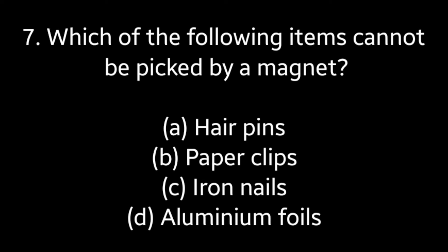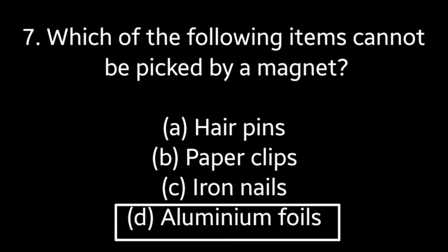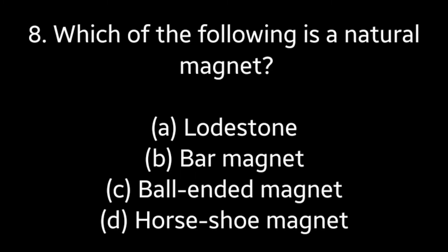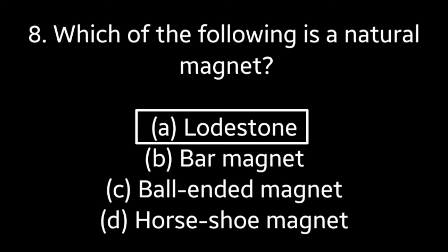Question number seven: which of the following items cannot be picked by a magnet — hairpins, paper clips, iron nails, or aluminum foils? Answer is option D: aluminum foils. Question number eight: which of the following is a natural magnet — loadstone, bar magnet, ball-ended magnet, or horseshoe magnet? Answer is option A: loadstone.